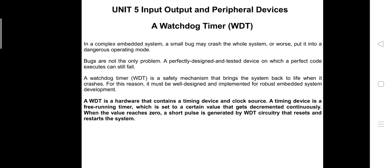A watchdog timer is a hardware that contains a timing device and a clock source. The timing device is a free-running timer set to a certain value and decremented continuously. When the value reaches zero, a short pulse is generated by the watchdog timer circuitry that resets the system — meaning the microcontroller, embedded system, or CPU. The watchdog timer consists of a continuously running timer and a clock source; when the timer decrements from a higher value to zero, it resets the system or microcontroller.